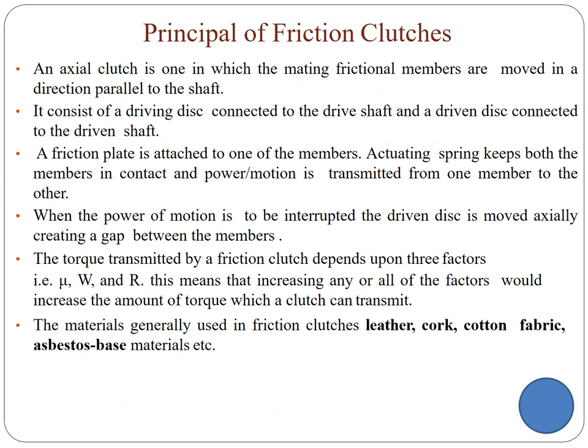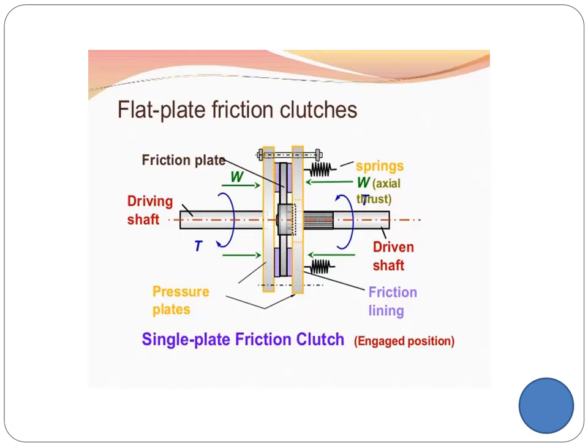The principle of friction clutch — I will explain with a diagram. You have two different shafts: one is a driving shaft and the other is a driven shaft. A driven disc is attached to the driving shaft, and in between, a frictional plate is placed, covered with frictional lining. These are attached to springs, and these two are called pressure plates. This frictional plate is attached to the driven shaft.